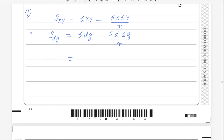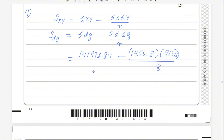Plug in all these values. Sum of dg is given in the question as 141,978.84. Sum of d is 1456.8 — use brackets as they are multiplying. Sum of g is given as 713.2 and the number of values is 8. If you write this as is in your calculator, you get the answer as 12,105.12. So this is the answer for summary statistics Sdg.